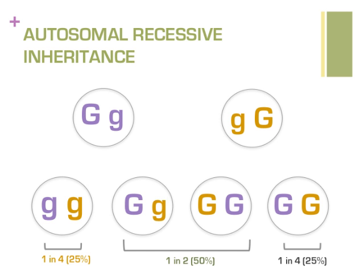Most often, this happens because each of her parents has one copy of the instruction that's working the way we expect, and another that is changed and works differently. These parents are called carriers. Two parents who are both carriers of the same autosomal recessive condition may both pass the changed instruction to the same child, who will then have the condition.